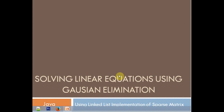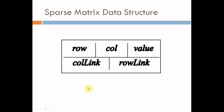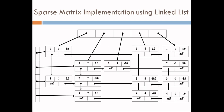It uses a linked-list implementation of sparse matrix. This is the sparse matrix data structure used. It has five fields: row and column, which are integers, the value which is a double, and col link and row link which are references. This is a high-level sparse matrix implementation using linked lists, with a series of row pointers and column pointers, and the values are stored as nodes.